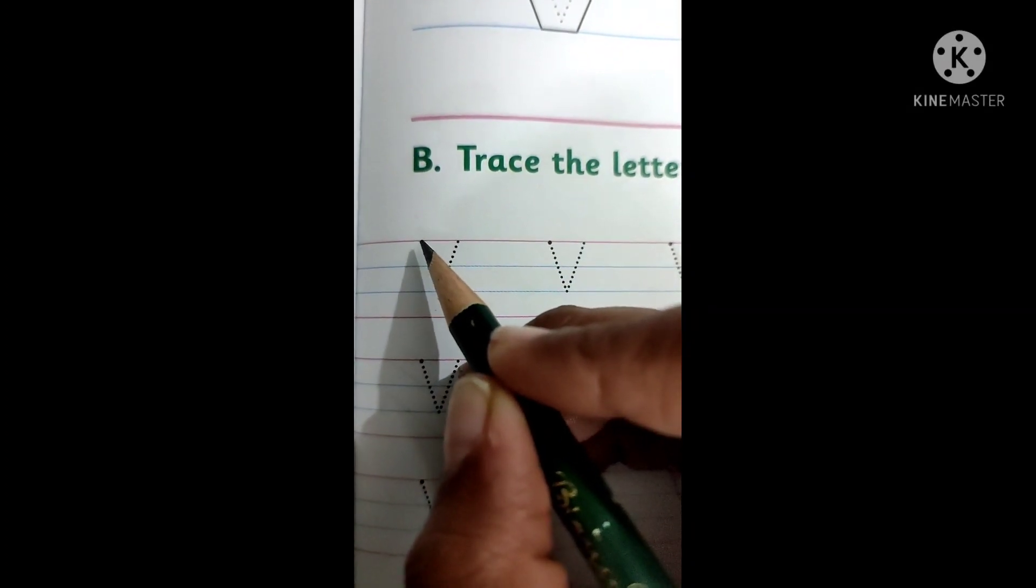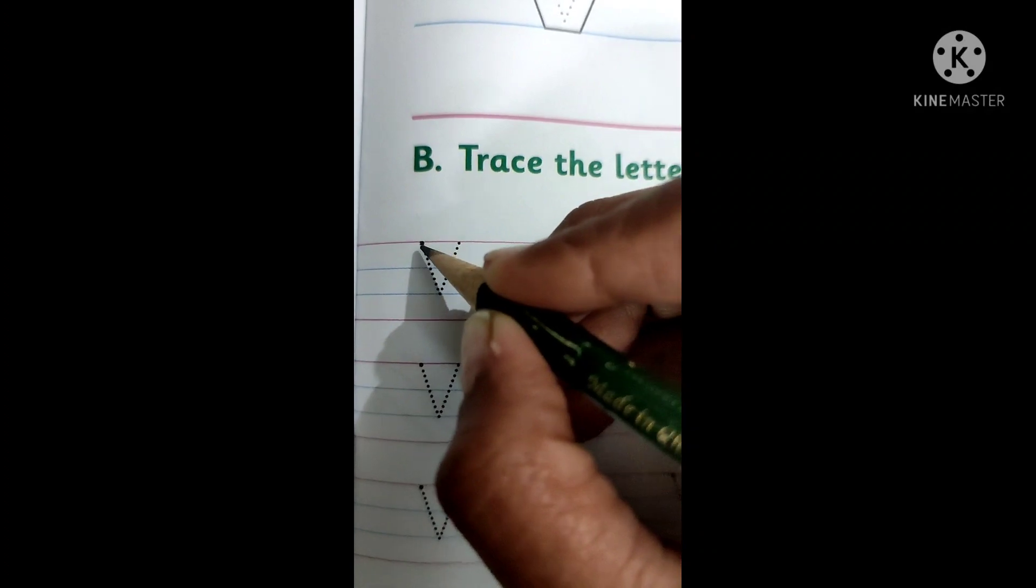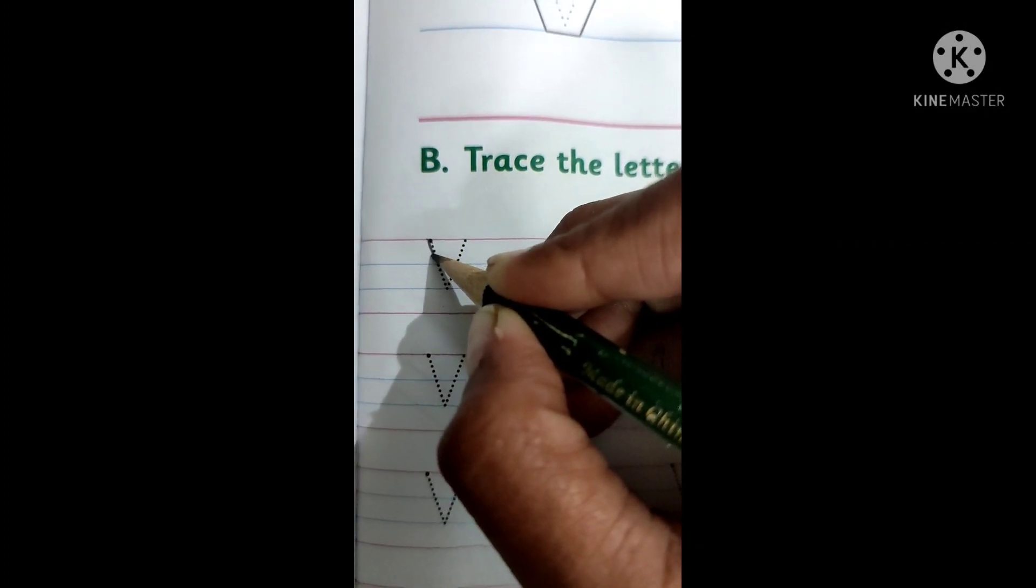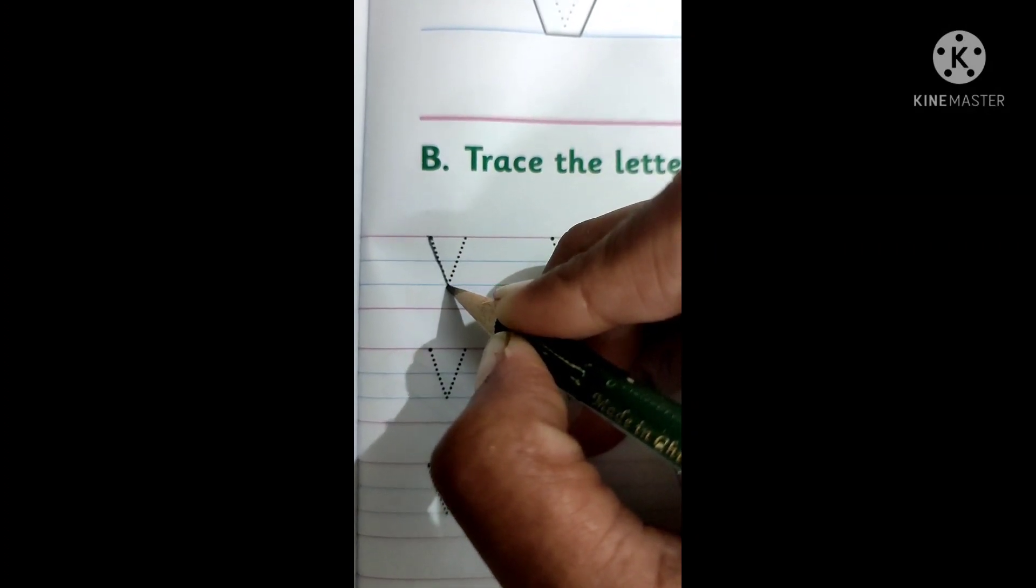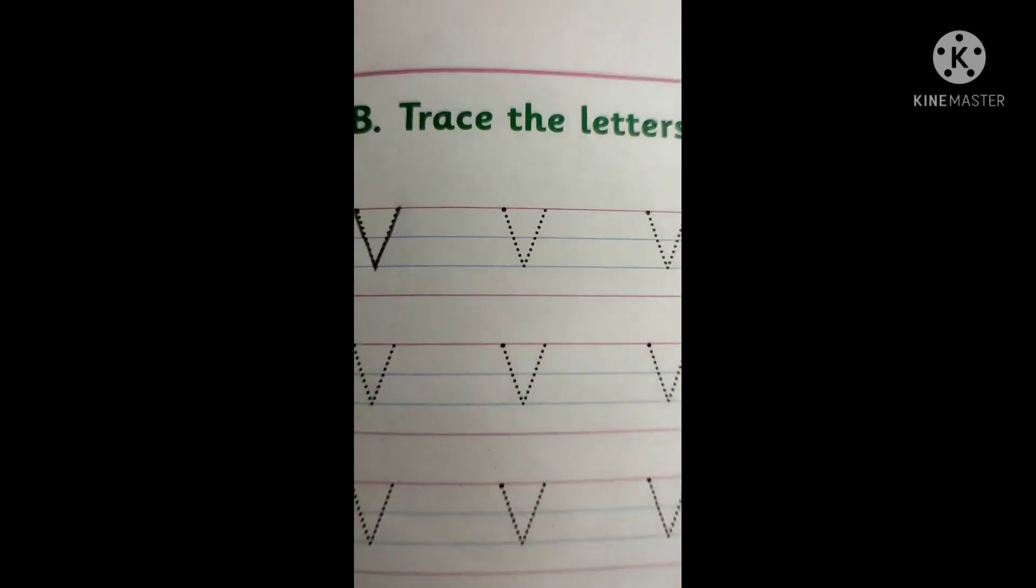Place your pencil here on the dot and make a slant line. Do it very carefully on the lines. Make a slant line and from here go up and touch the line. This is capital V.